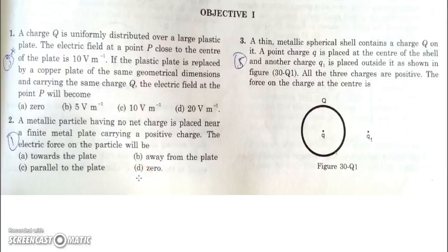We will be discussing Gauss law objective 1 from H.C. Verma. In the first question, there is a uniformly distributed charge over a large plastic plate and it produces a field of 10V per meter.